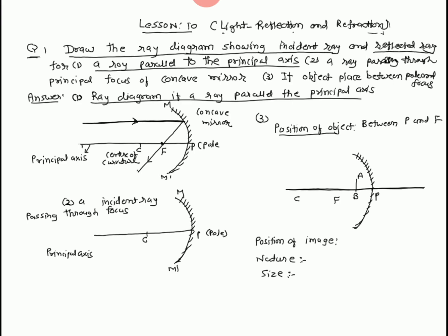Now we solve the second question. A ray — the incident ray — passing through the focus. This is the focus. The ray passing through the focus, after reflection, it is parallel to the principal axis. This is the reflected ray. The incident ray passing through the focus, after reflection, it is parallel to the principal axis.